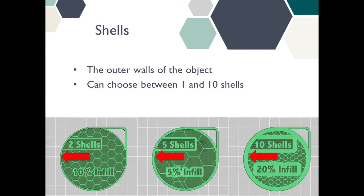Next, you will choose the number of shells you want. The shells are the outer walls that form the perimeter of your object. The more shells you have, the thicker and stronger that outside wall is going to be.